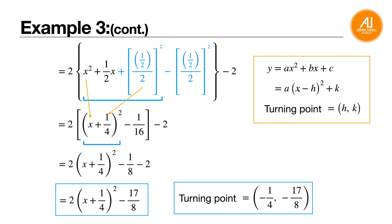A quick recap: always make sure the coefficient of x squared is 1 before performing completing the square. You have the first two terms and need the third term to complete the square — that's why it's called completing the square. Then multiply the common factor back in and simplify to get your turning point. For the turning point: if inside is minus h, you take out a positive h; if inside is positive, you take out a negative. If outside is plus k, you just take it as it is — don't flip the sign. That's all for completing the square.